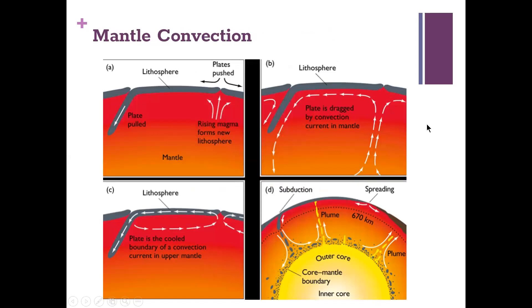Mantle convection is what fuels a lot of plate tectonic movement. A good analogy is boiling a pot of water — bubbles move from the bottom to the top in a circular motion. Similarly, in the Earth's core, heat warms the mantle material. The hot mantle rises and hits the lithosphere, where it begins to cool and moves back down, creating a circular motion called mantle convection. This is what drives plate tectonics, and combined with subduction and seafloor spreading, drives recycling of crustal material throughout Earth's history.